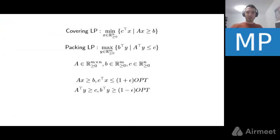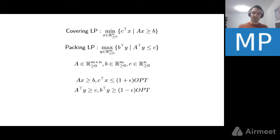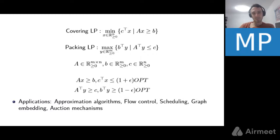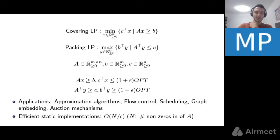Just to clarify: we are considering positive linear programs — either packing, covering, or in some cases mixed packing-covering — and we will be in the approximate regime. That means our solution is expected to be approximately feasible, either with respect to constraints or with respect to the optimum value. Linear programs have a bunch of applications: approximation algorithms, flow, graph algorithms, matching even for the weighted case modeled by LPs. For approximate solutions, there are very efficient implementations running in essentially optimal time up to polylog factors.